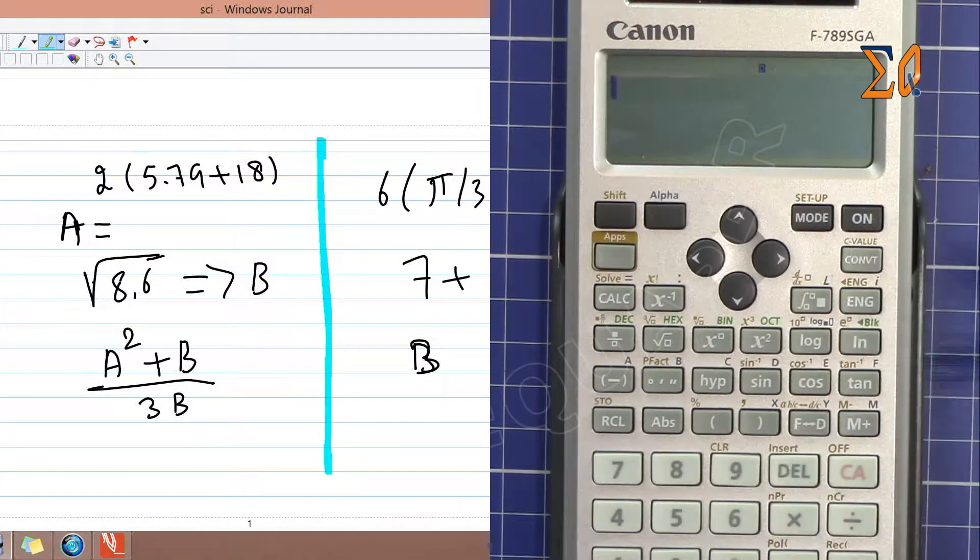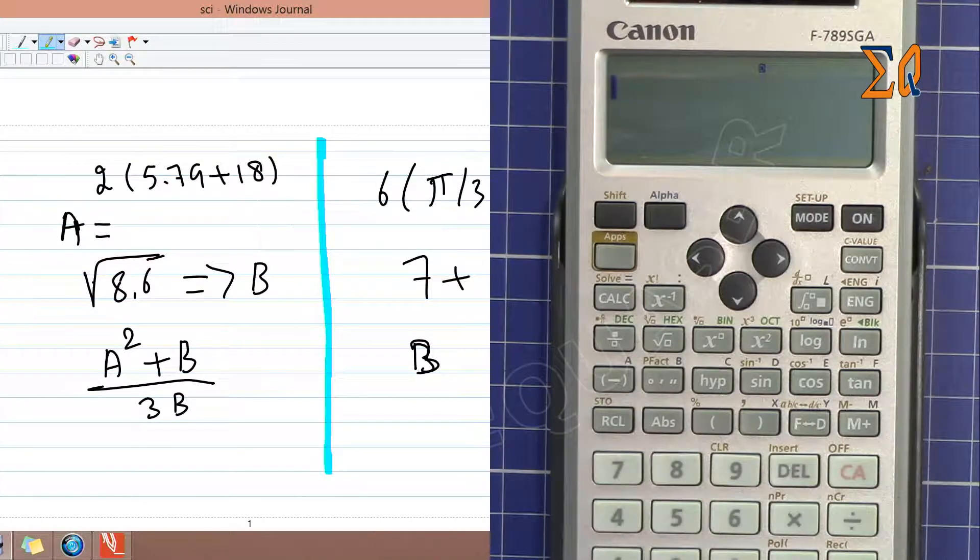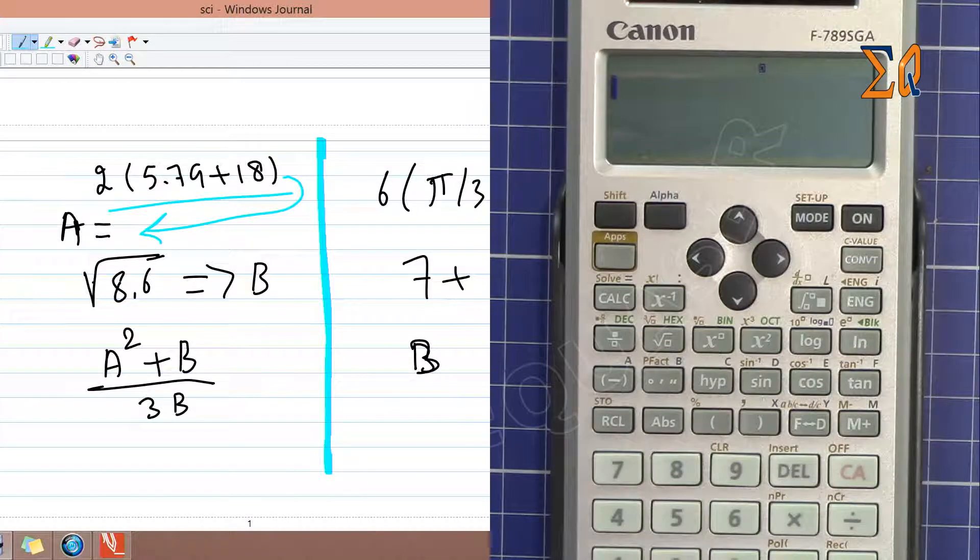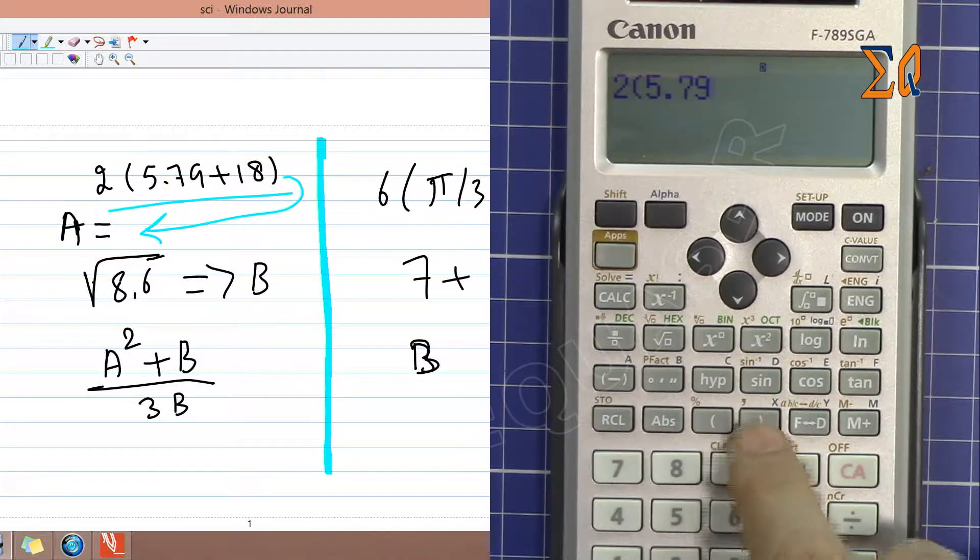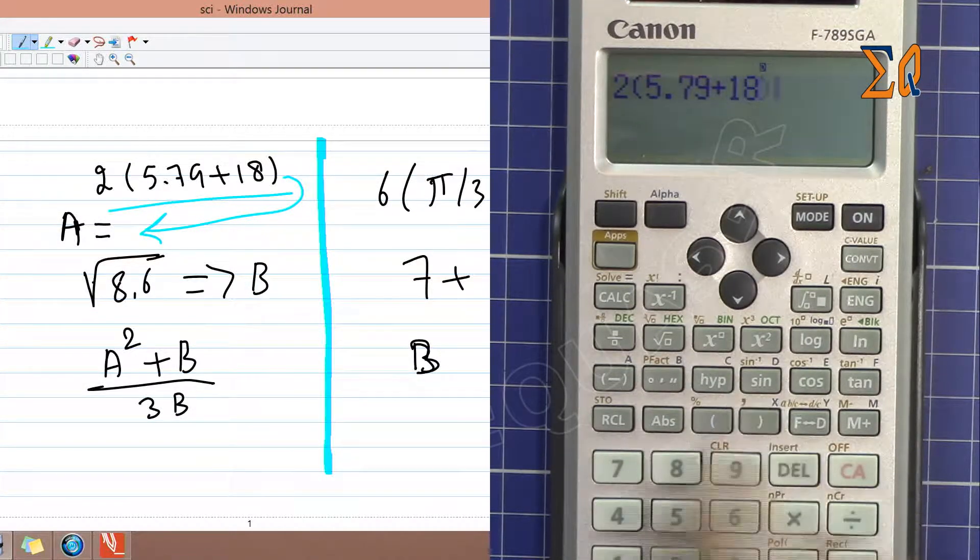So let's turn it on. Now let's say if you want to do this calculation and after this calculation you want to put the result into memory A. So we press 2, parenthesis open, 5.79 plus 18, parenthesis closed.